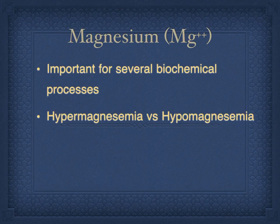Magnesium is used in several places throughout the body in many different chemical and biochemical reactions. It's an important enzyme cofactor in that respect. The terms we use are hypermagnesemia and hypomagnesemia.